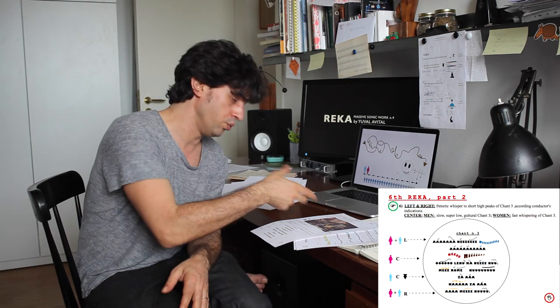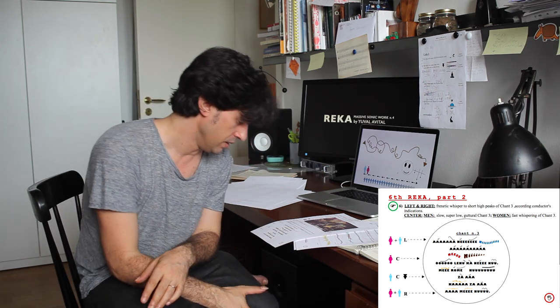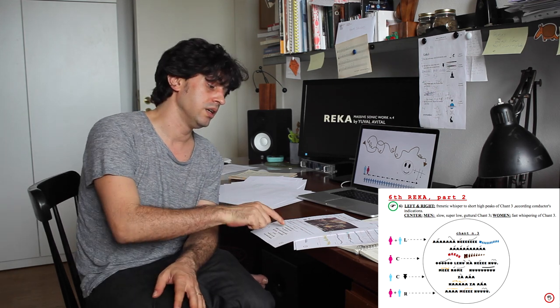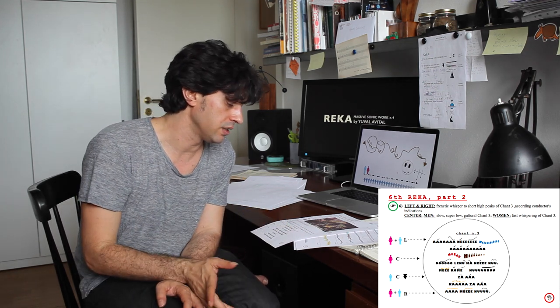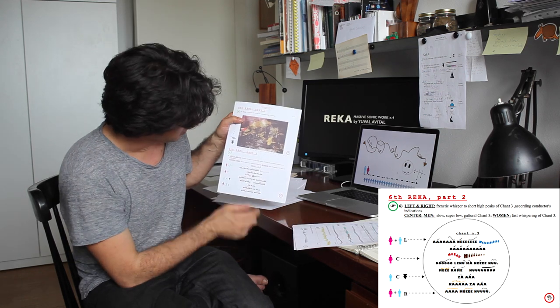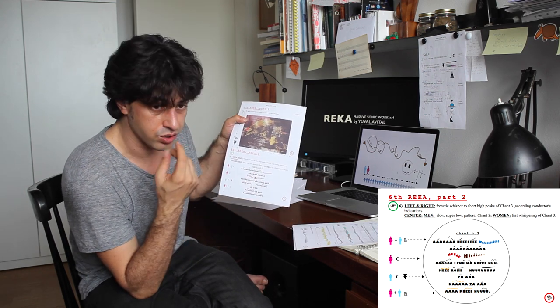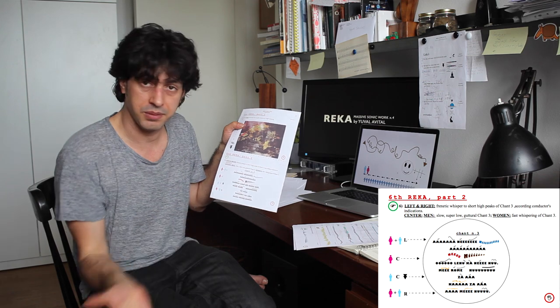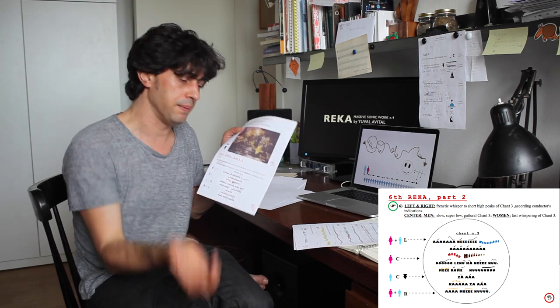Which is still, you need to look a little bit at the image to get inspired if it helps you. So here you have left and right, you have a frenetic whisper to short high peaks of chant number three according conductors indication. What does it mean that you have this text of the chant number three, it's very graphic, and you just whisper it very fast and sometimes the conductor will bring you up and you give like an exclamation.